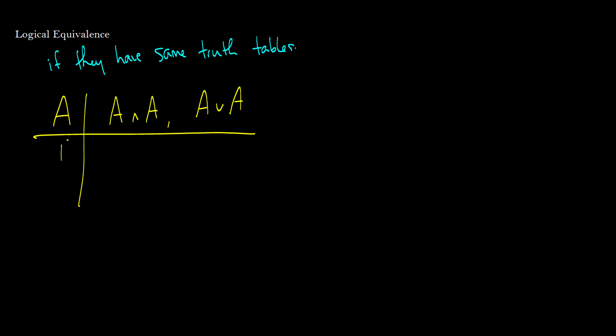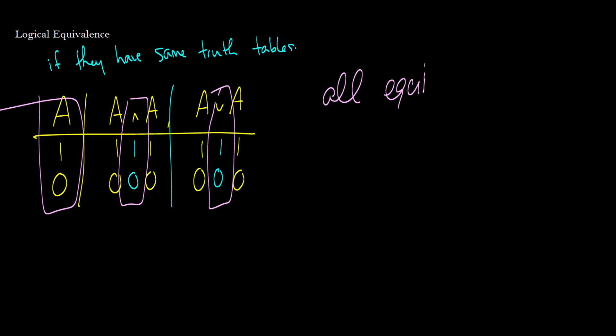So the truth table for A is going to be true and false. In fact I'm going to start using ones and zeros now because I prefer them. So let's write these out here underneath all of our A's. Well A and A is true in the first scenario and it's false in the second scenario. And A or A is true in the first line and false in the second line. And these all have the same truth tables. Therefore these are all equivalent. And that means that if in a sentence if you have A then you can write A or A to mean the same thing. Or you can write A and A to mean the same thing. So these are all interchangeable because they all mean the exact same thing.